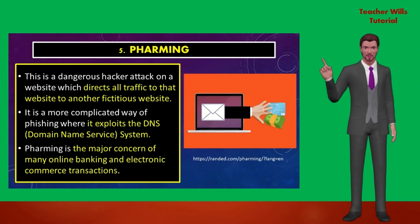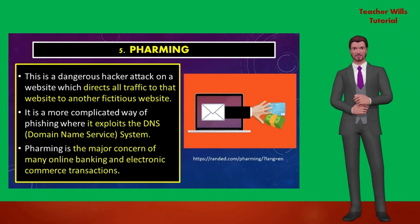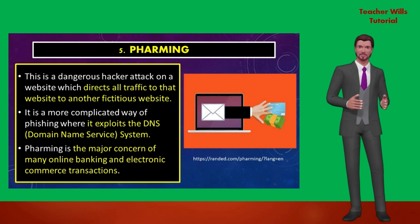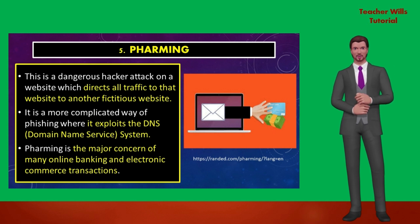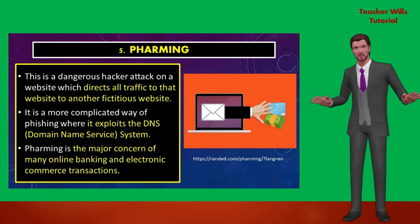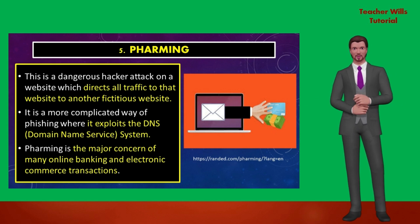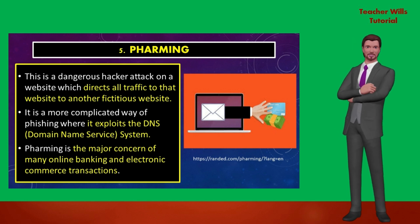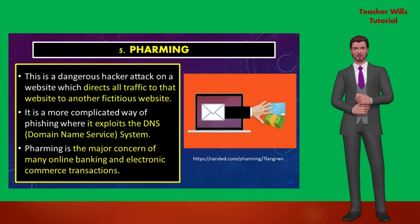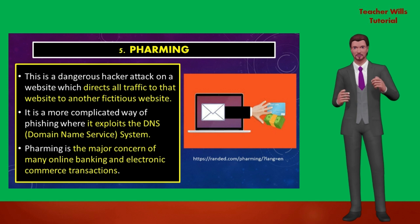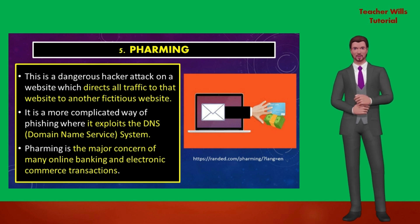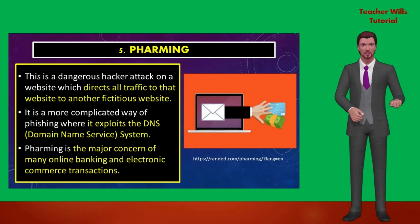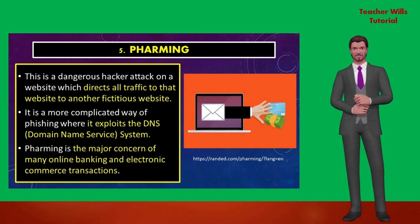The pharming. Pharming is a dangerous hacker attack on a website which directs all traffic to that website to another fictitious website. It is a more complicated way of phishing where it exploits the domain name service system, or DNS. The main object of pharming is to obtain usernames and passwords, as well as credit card and financial information, and use these to steal their money electronically or use the credit card of the victims. Pharming is a major concern of many online banking and electronic commerce transactions, which would compromise many of their client accounts as well as the business. Antivirus and anti-spyware software cannot prevent and protect one from pharming.